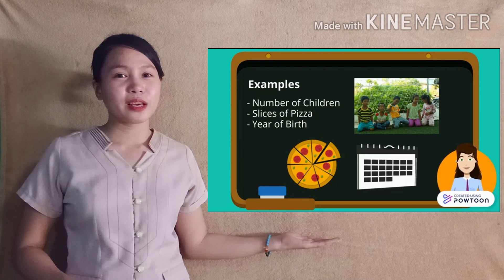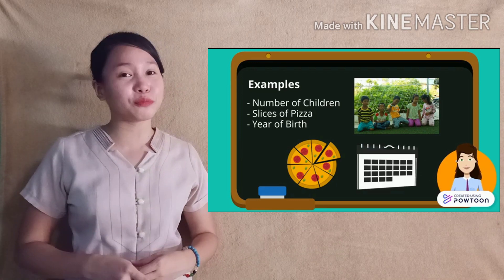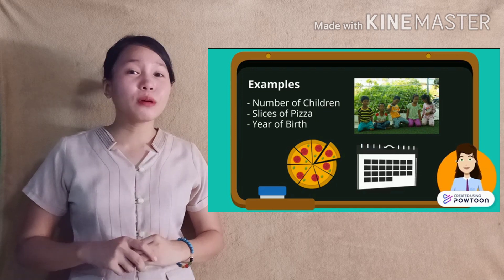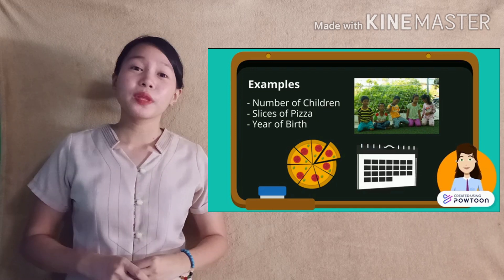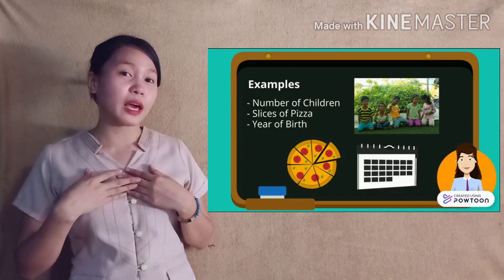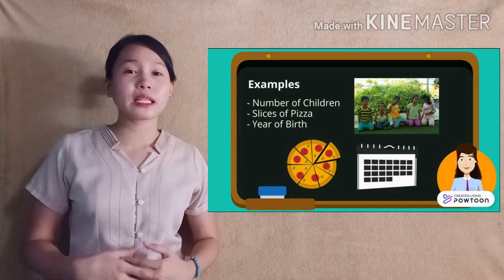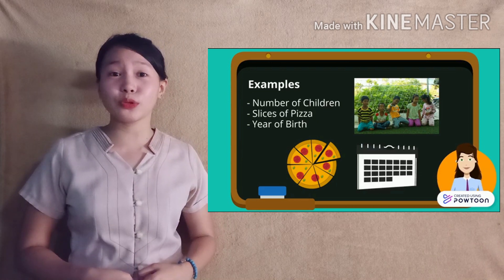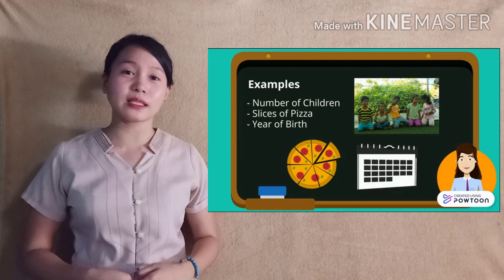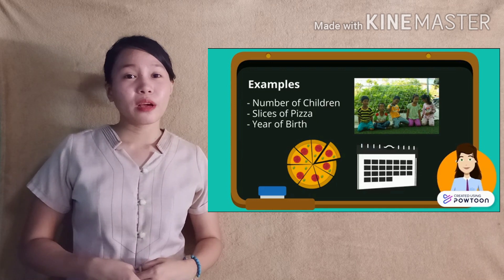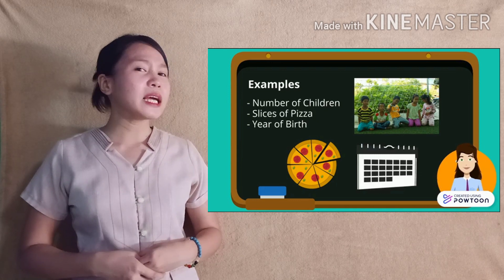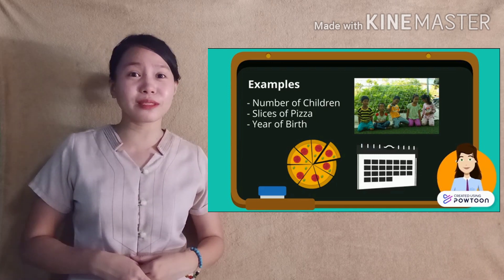Here are our examples: number of children, slices of pizza, and year of birth. In every family, the number of children varies. You could be the only child, you could have 5 children, or just like me, we are 8 in the family. Also, in the slices of pizza, you could decide how many slices you want — 8 slices, 6 slices, or 4 slices. And year of birth: I was born in 1995 and you could be born on any other year. So what other examples of discrete random variables can you think of?